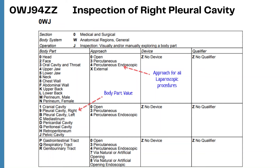The approach is Percutaneous Endoscopic. An important point: all laparoscopic procedures are coded to Percutaneous Endoscopic as the approach value. In laparoscopic procedures, only two or three keyhole incisions are made, a scope is inserted, and no larger incision is made — that is why it is coded as percutaneous, and since a scope is used, it becomes Percutaneous Endoscopic. The sixth character is No Device and the seventh character is No Qualifier, giving the code 0WJ94ZZ.